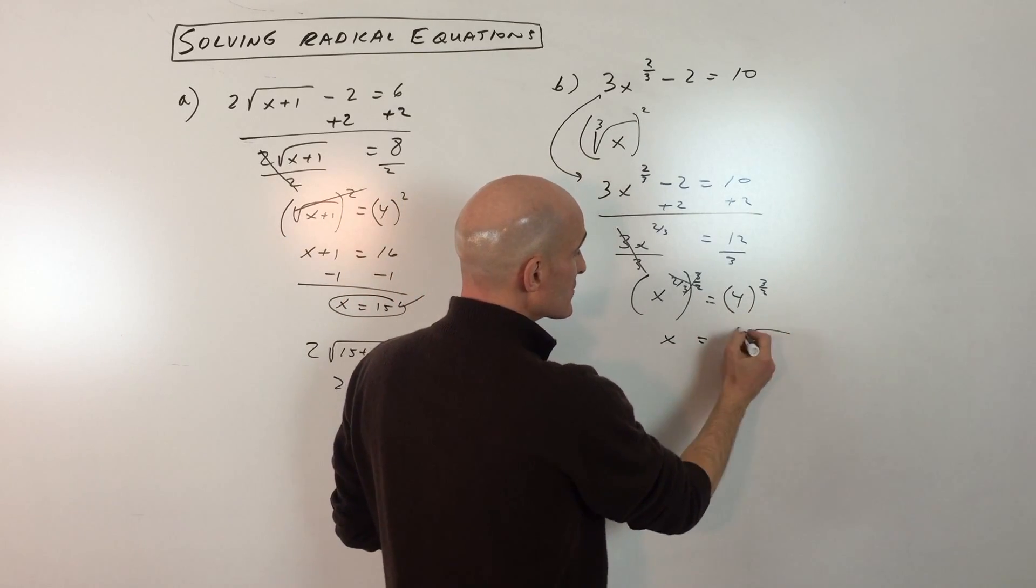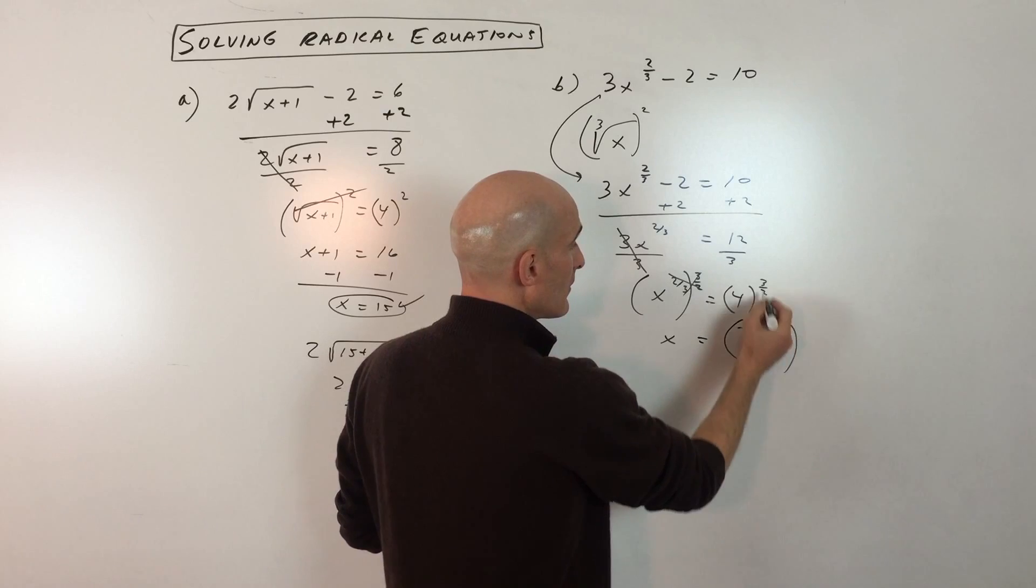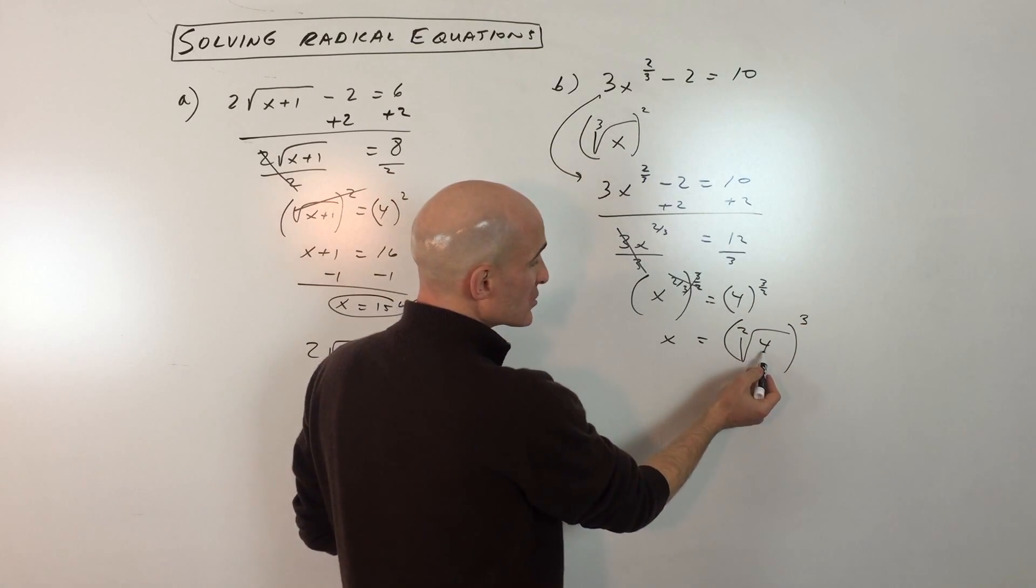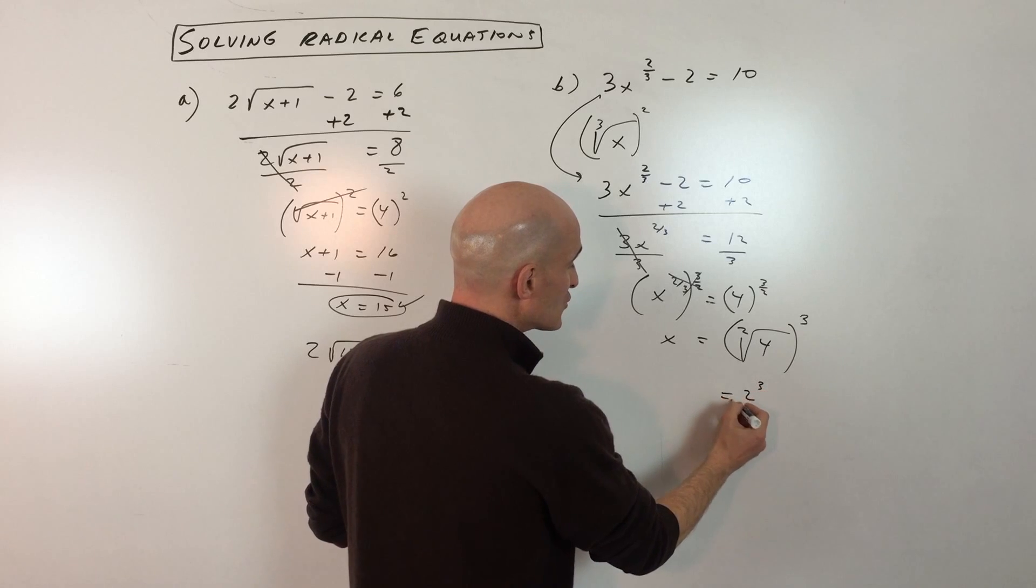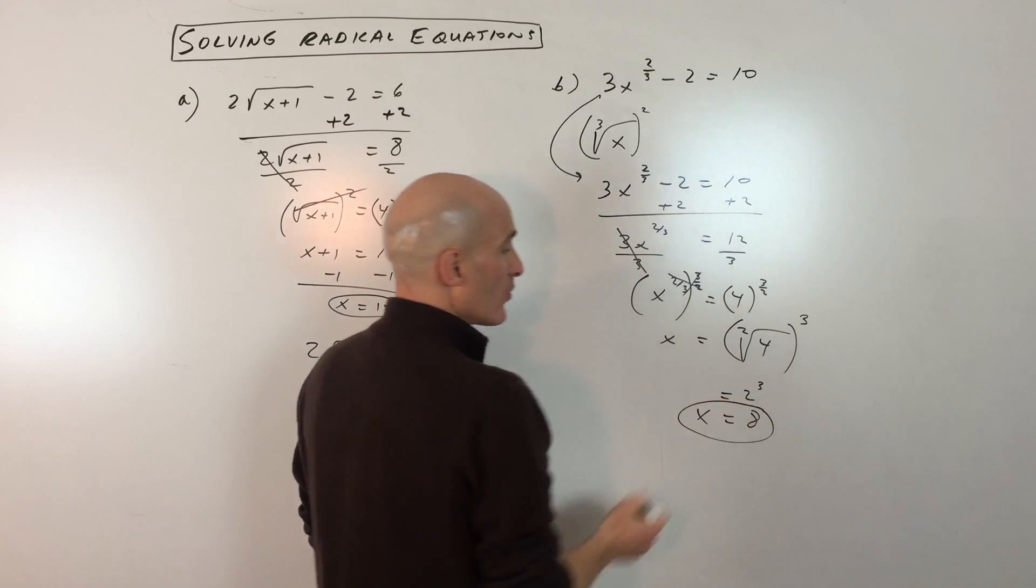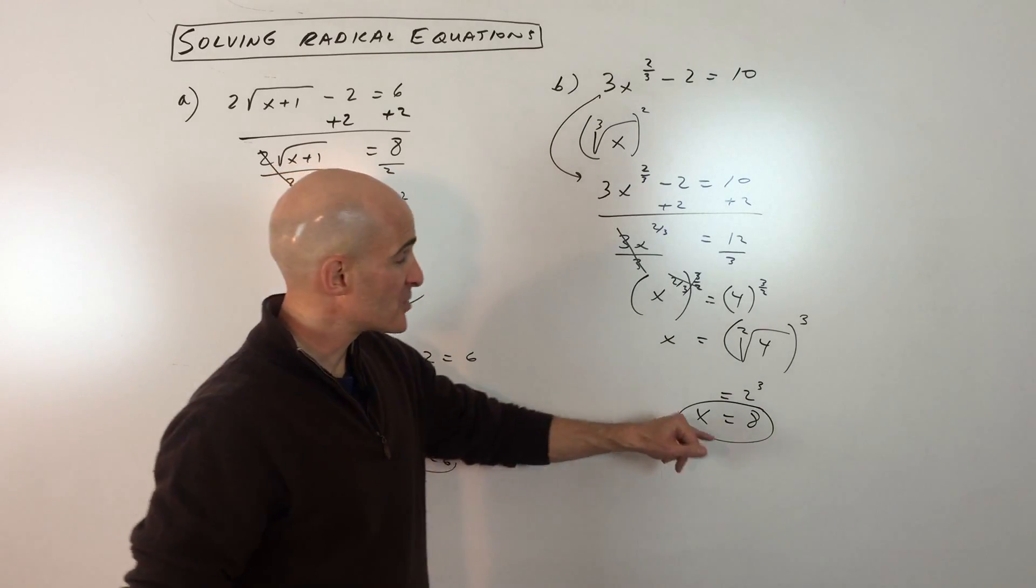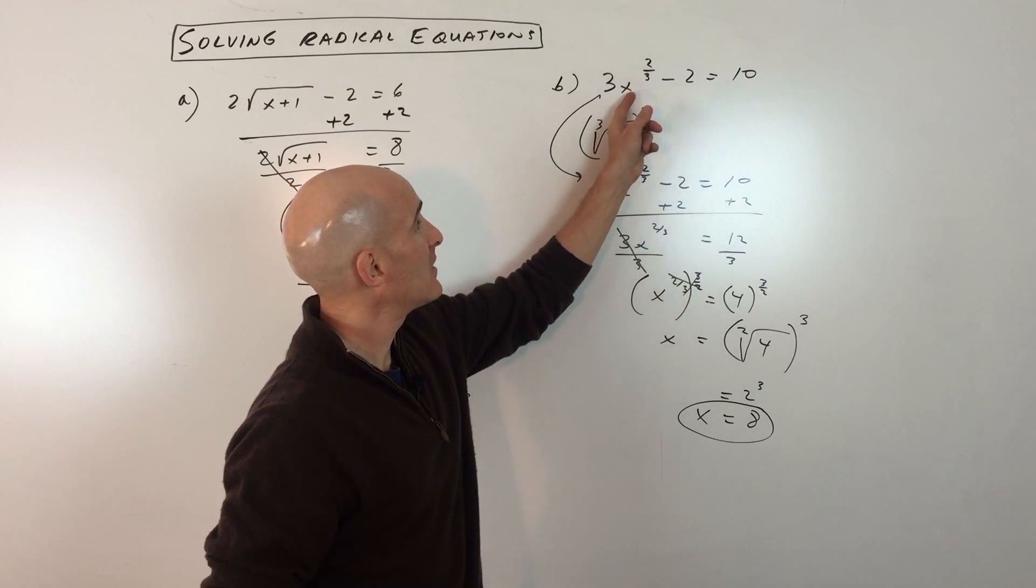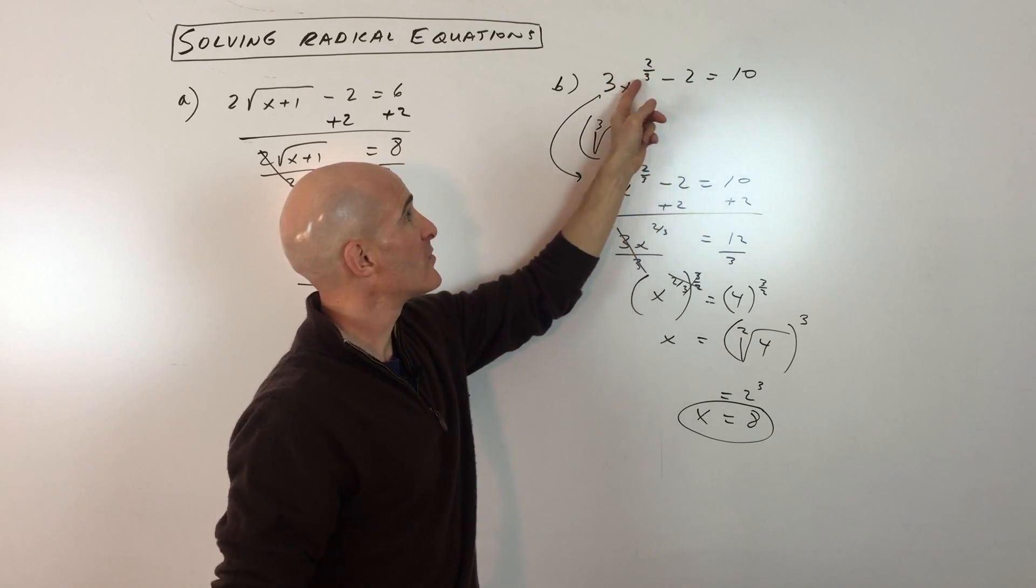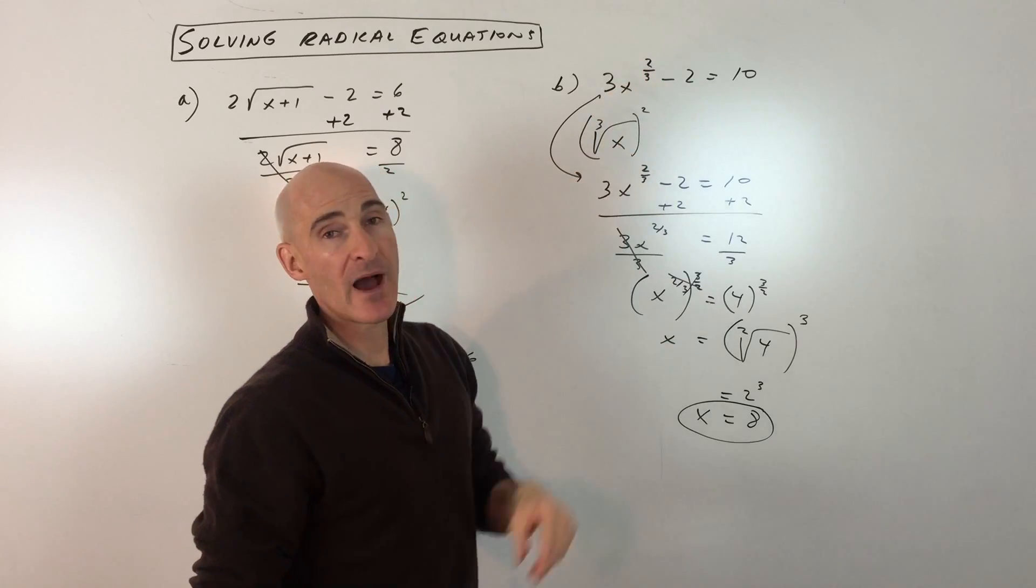Remember, the denominator is the root. So this is saying the square root of 4. The numerator is the power, so that's raised to the third power. Square root of 4 is 2, and then 2 cubed is 2 times 2 times 2, which is 8. So 8 is going to be the answer to this problem. But again, let's just go ahead and put it back in to double check. This is the cube root of 8, which is 2. 2 squared is 4 times 3 is 12 minus 2 is 10. So just remember, the denominator is the root and the numerator is the power.